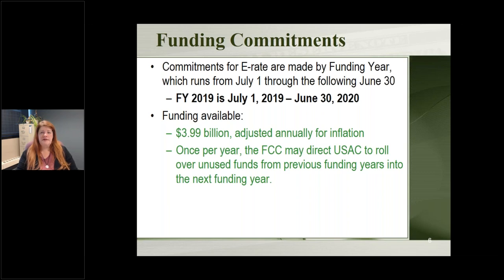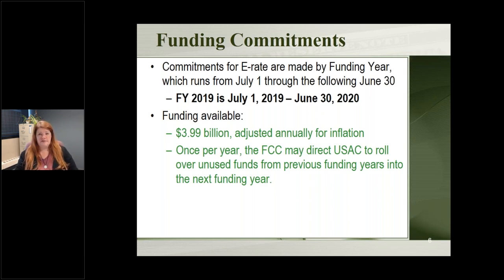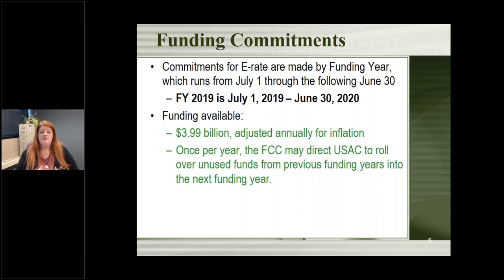The E-rate funding year runs from July 1st of any year through June 30th of the next year. Right now you're submitting forms to start receiving funding starting July 1st, 2019, going through June 30th, 2020. E-rate is an annual process — you have to reapply every year for the next funding year. There is officially $3.99 billion available in the program, adjusted annually for inflation. If there is extra money from a previous year that has not been distributed, it can roll over into the next year.